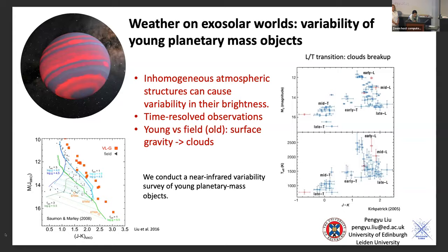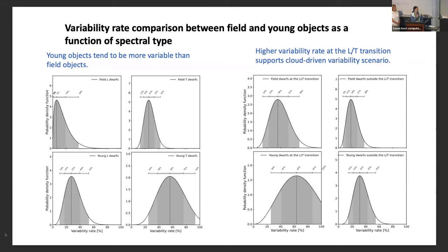My survey found that young objects tend to be more variable than field brown dwarfs. As a function of spectral type, both field and young objects tend to have a higher variability rate at the L-T transition than outside of it, which agrees with the scenario that silicate clouds break up at the L-T transition. If you want to know more about the variability of brown dwarfs, please visit my poster.